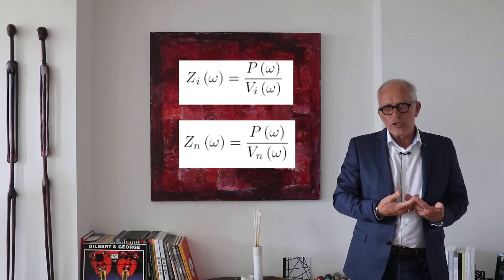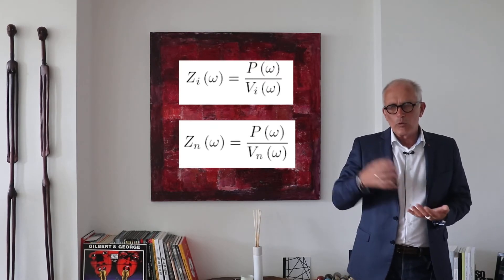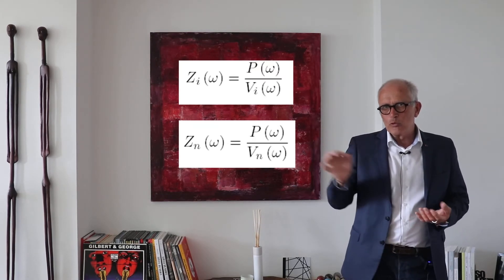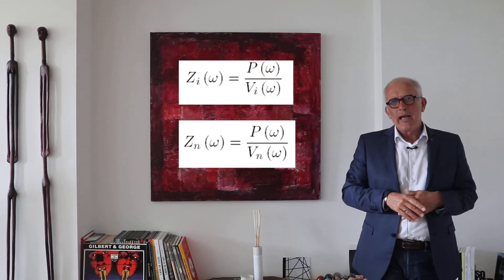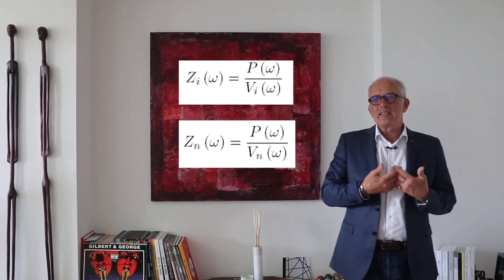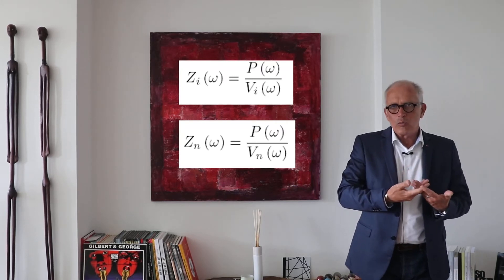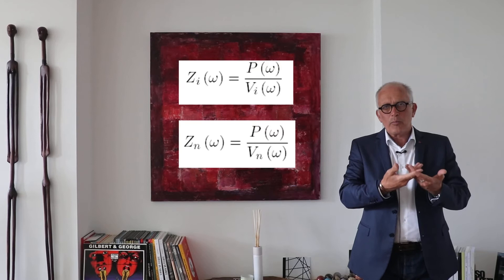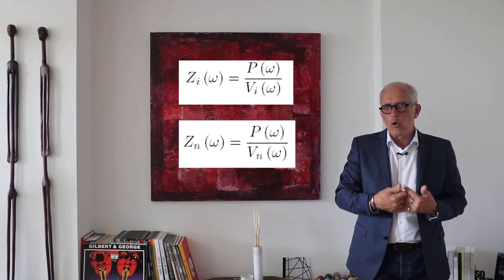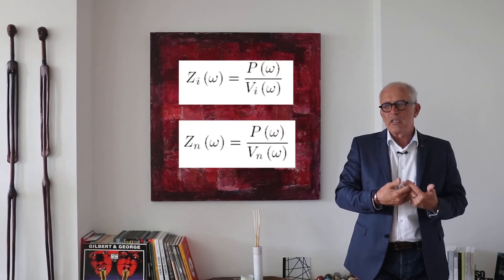If you have a perfectly rigid wall, on a perfectly rigid wall the particles are not able to get inside the wall and so the normal velocity is necessarily equal to zero. So on a rigid wall the pressure spectrum divided by the normal velocity is going to be infinite.